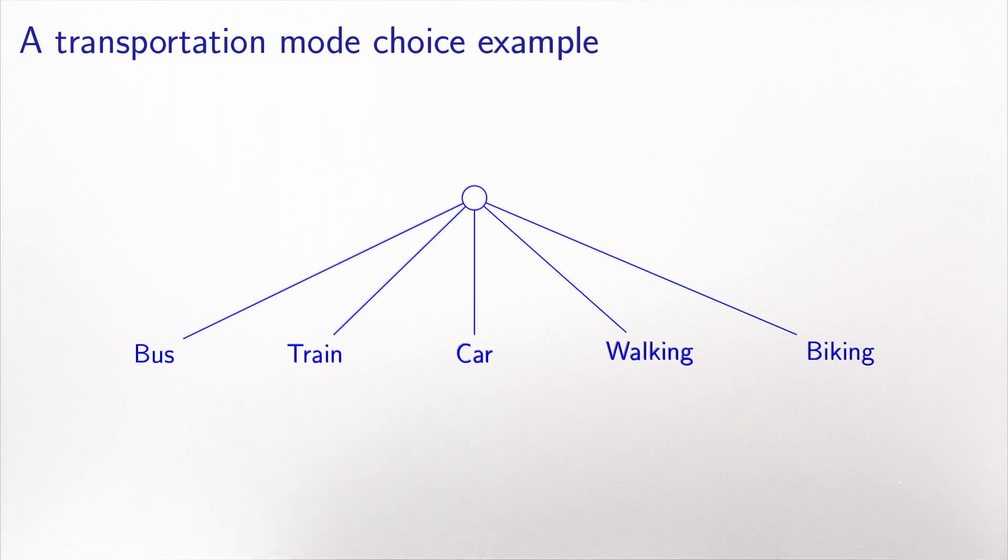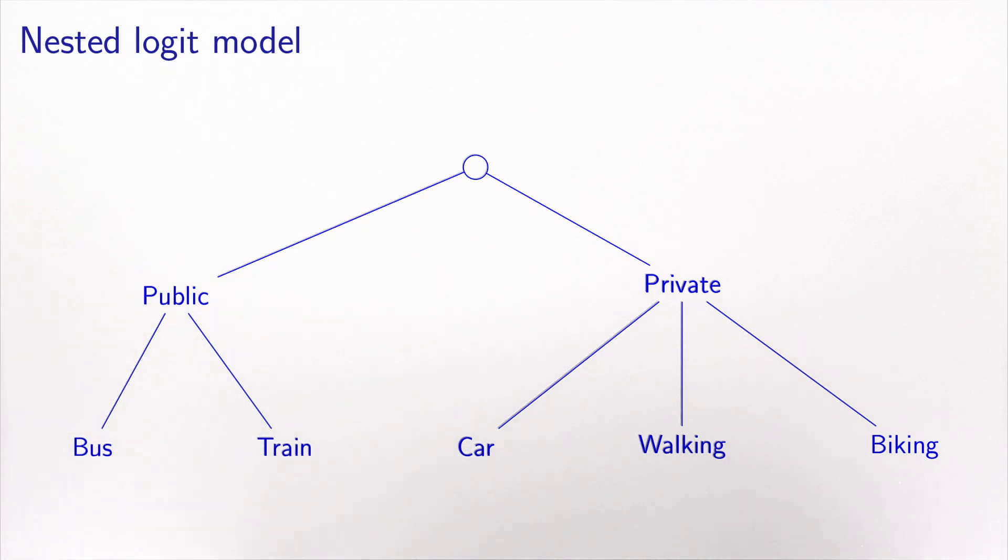Indeed, some of these alternatives are public transportation, while the other alternatives are private transportation mode. Therefore, I can consider a nested logit model that looks like this. I have two nests. One nest is public and contains bus and train. And one nest is private and contains car, walking and biking.